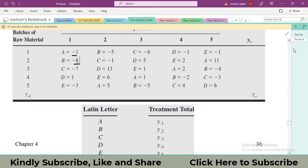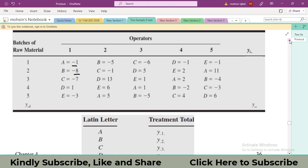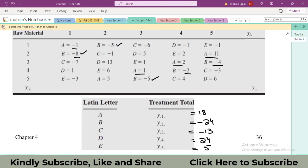Once you have done with the coding, next step is to calculate the treatment sum. Y dot 1 dot, it is the sum for A, first alphabet. Let's write here A. Minus 1 and 5, 4. 4 and 1, 5. 5 and 2, 7. 7 and 11, 18. Let's do it for factor B also. Minus 8 minus 5, minus 13. Minus 13 minus 5, minus 18. And then minus 20, minus 24.